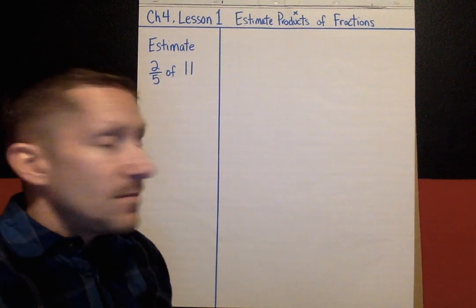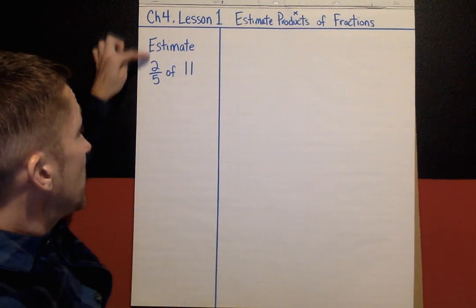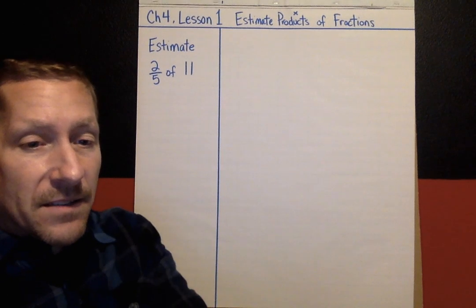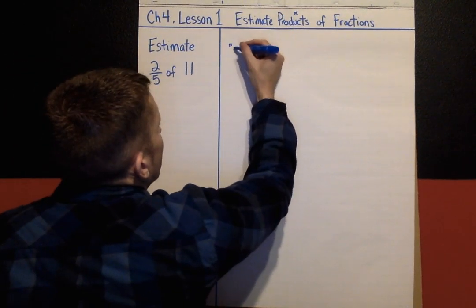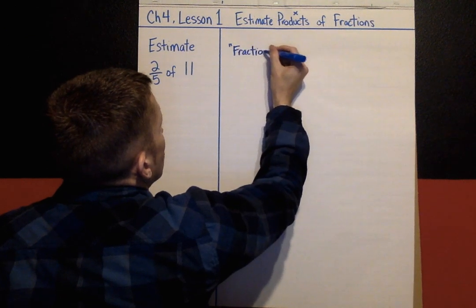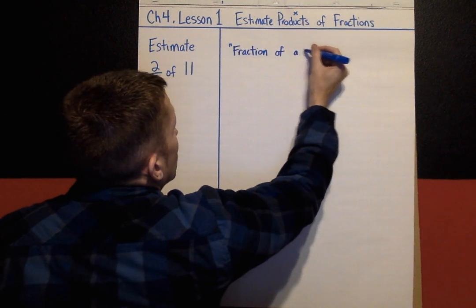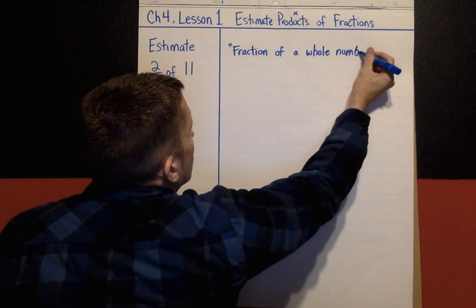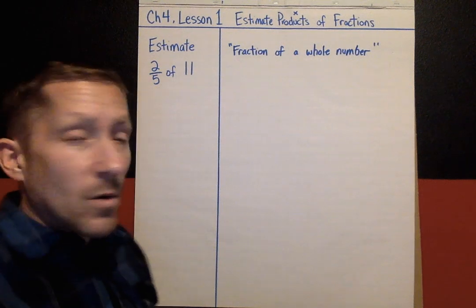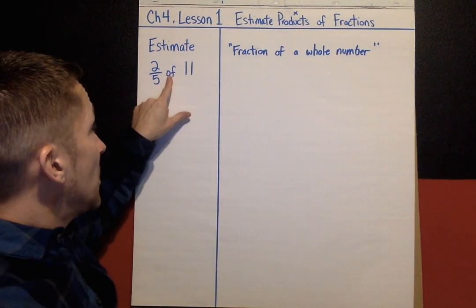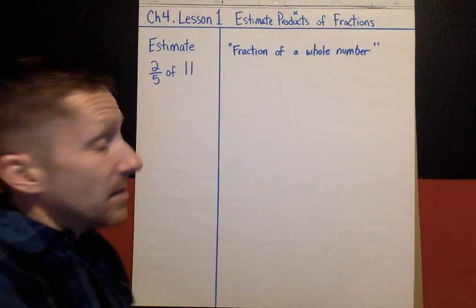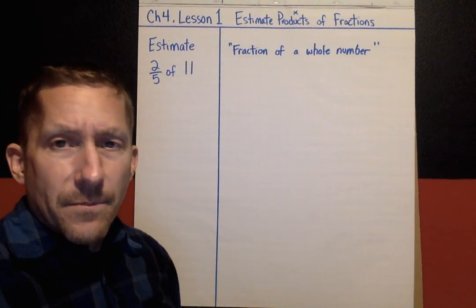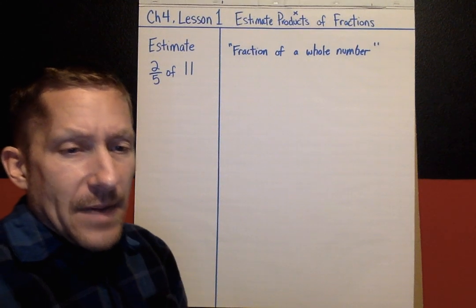The first example is: come up with an estimate for two-fifths of 11. So this first example is a fraction of a whole number — two-fifths is the fraction, and 11 is the whole number. This first example is the trickiest one of the day, so you may need to back it up and watch this one again.